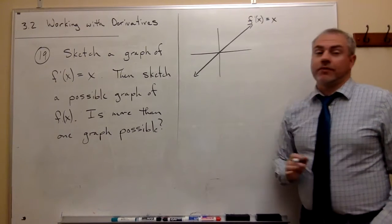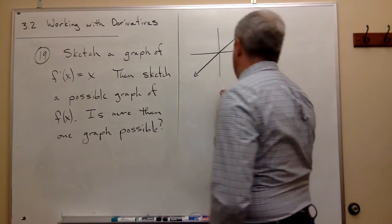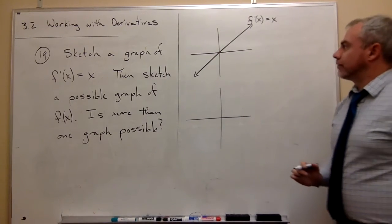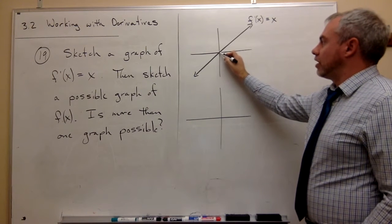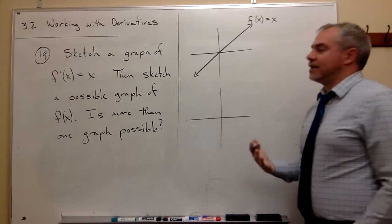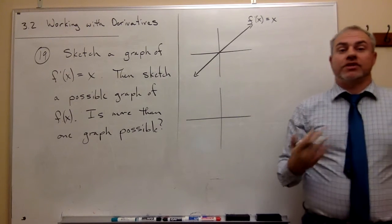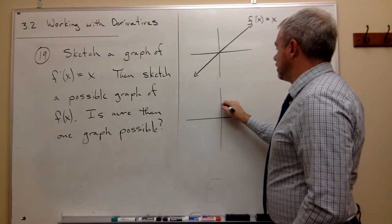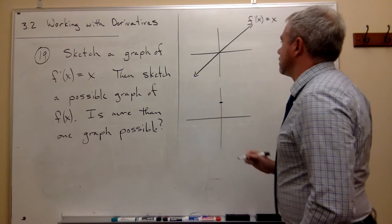And now we want to use this information to sketch a graph of our original function f of x. So if we want to sketch the original function, well what we see here is that the slope at zero is zero. So if the slope at zero is zero, that doesn't really tell me what the functional value is, it just tells me what the slope is. So I can put this point anywhere I want to. So let's just say I put it right here. But I know that the slope right there is zero.